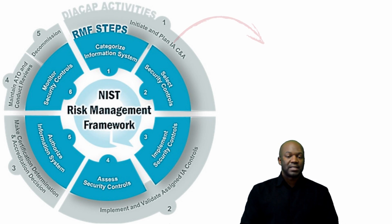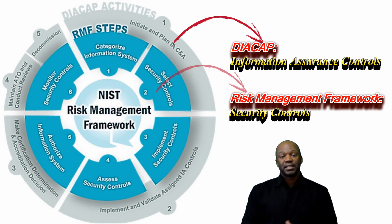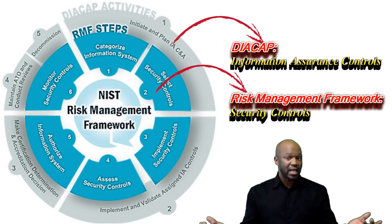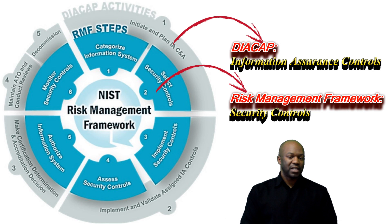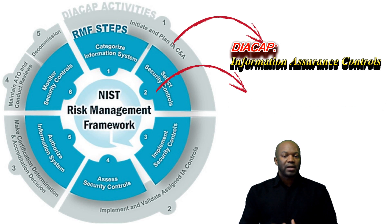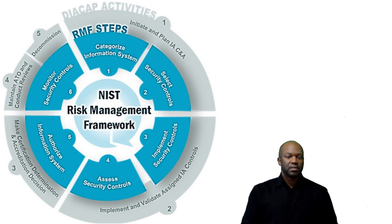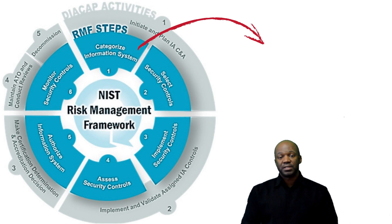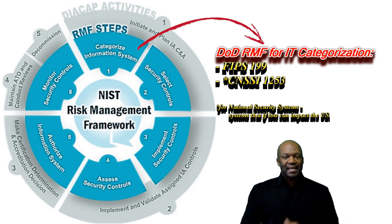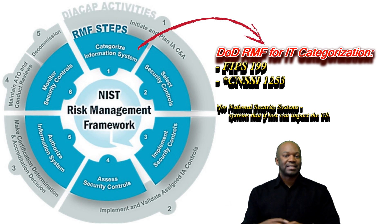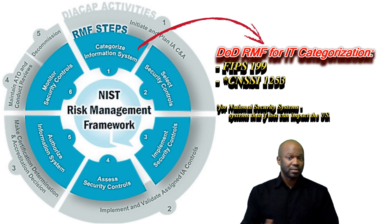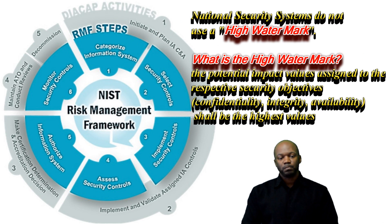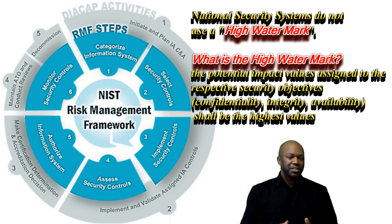The other thing you're doing in step one of DICAP is selecting the security controls. In DICAP, you call it Information Assurance — the name changed, but also the security controls themselves changed. That's a huge difference. With categorization of the system, not only are you going to use FIPS 199 for DOD systems, but you're also going to use CNSSI-1253, which is also categorization of the system. It's like an overlay — an extra level you have to go through to categorize your system if you have a national security system. They also don't use what's called a high-water mark. That's the big difference in categorization of the system.